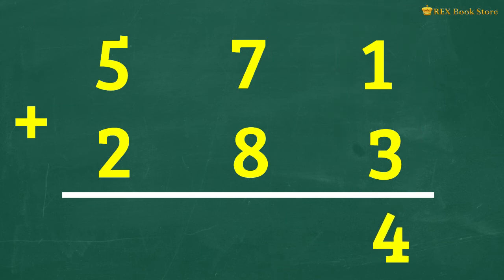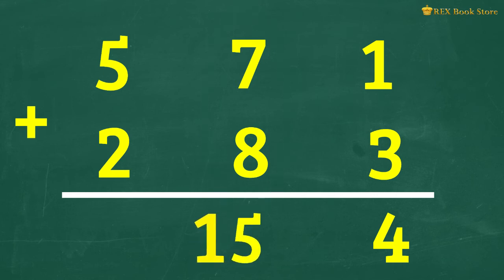Adding 7 tens and 8 tens gives you 15 tens. What are you supposed to do? That's right! Regroup 15 tens into 1 hundred and 5 tens.